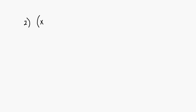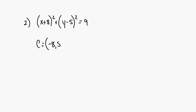Number two: find the center and the radius of the circle with the equation x plus 8 squared plus y minus 5 squared equals 9. The center of this circle is going to be at negative 8, 5. The radius will be equal to the square root of 9, so the radius equals 3. Remember, that value out here is r squared, so if r squared equals 9, the square root of each side gives you radius equals 3.